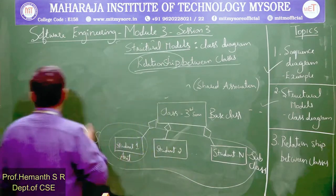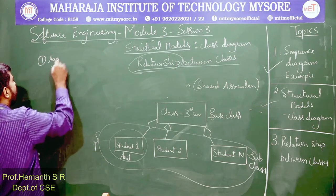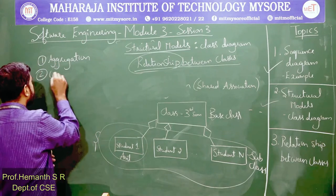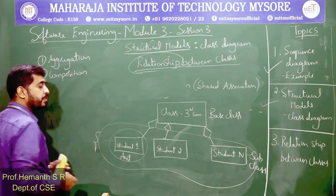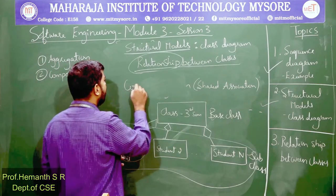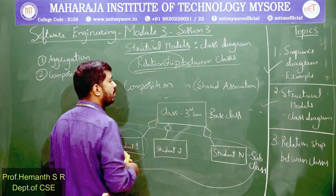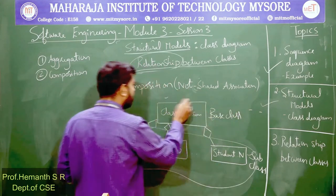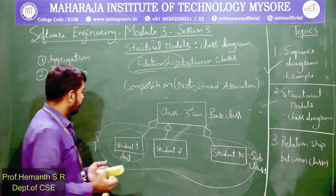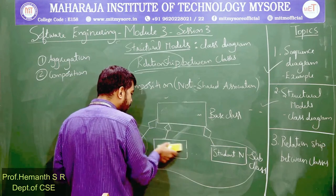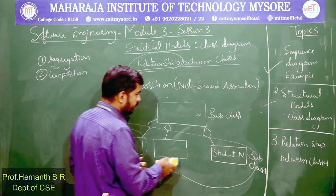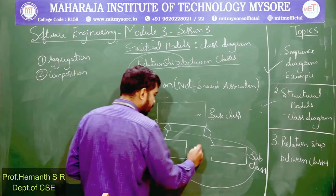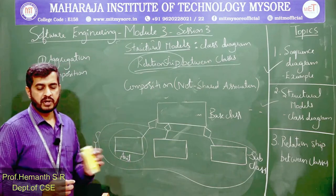The first type of relationship was aggregation. The second is composition, also called not-shared association. We will take a different example for clarity — the scenario is still the same: a base class and subclasses with a relationship between them. But what type of relationship?